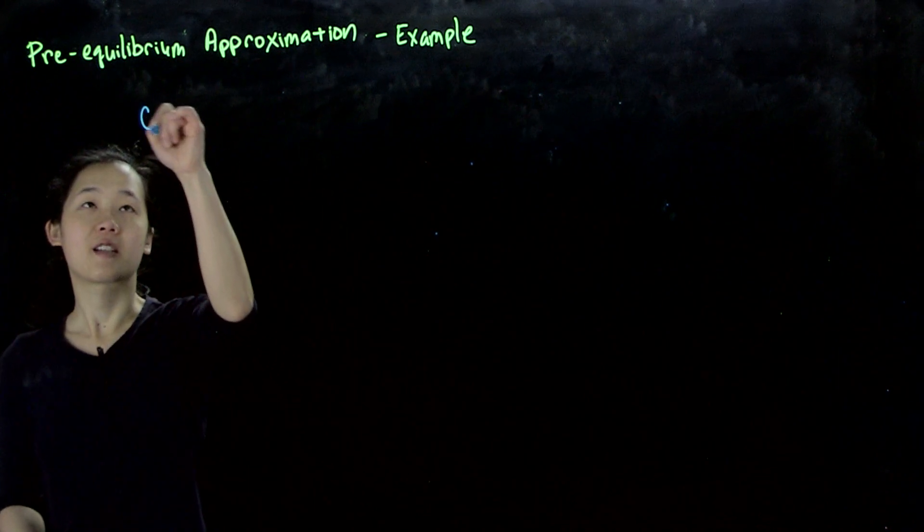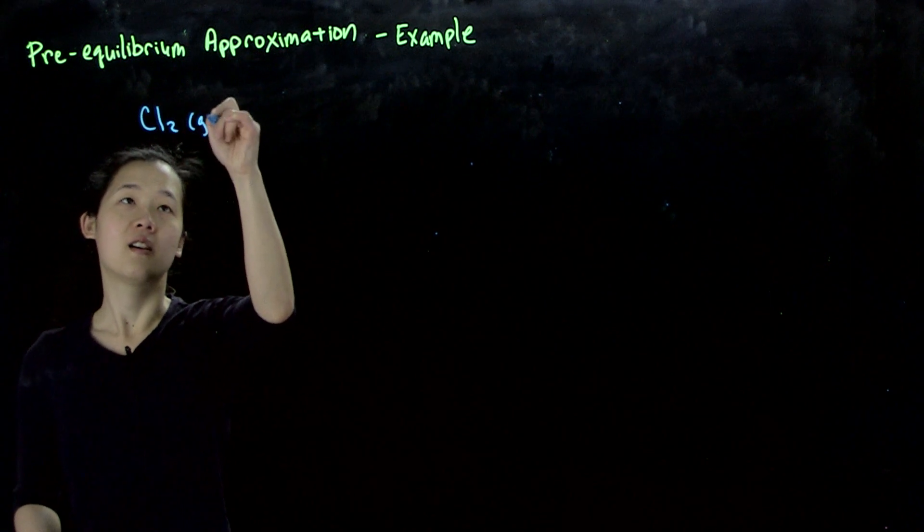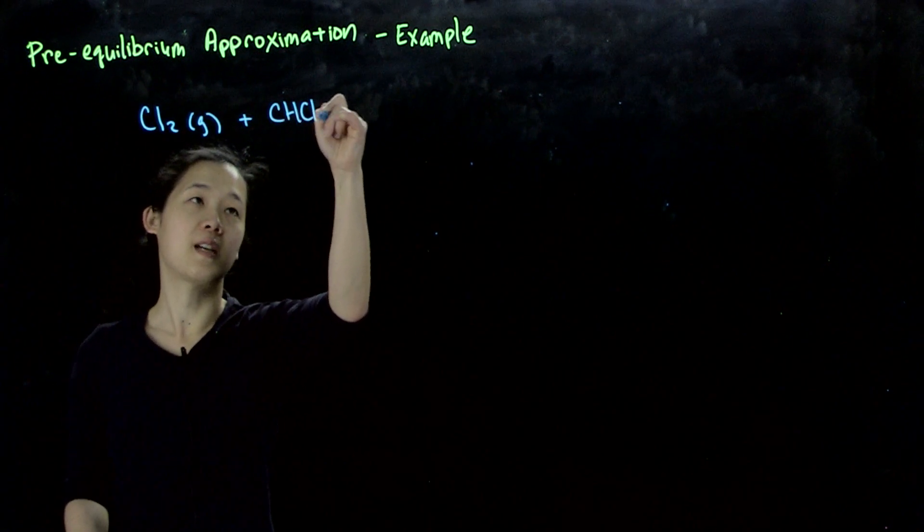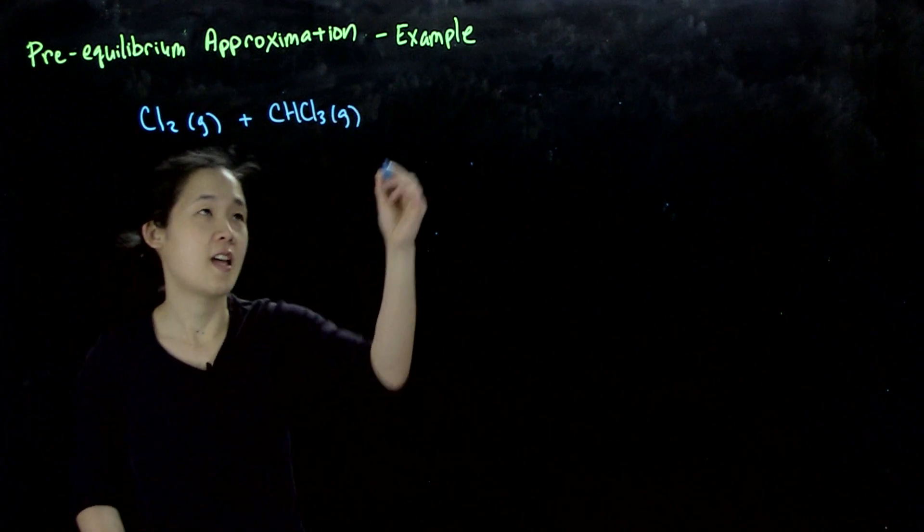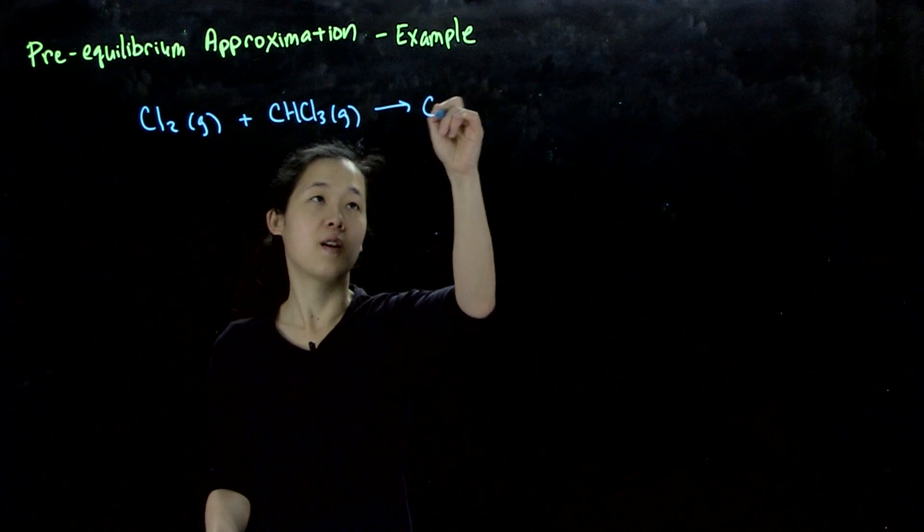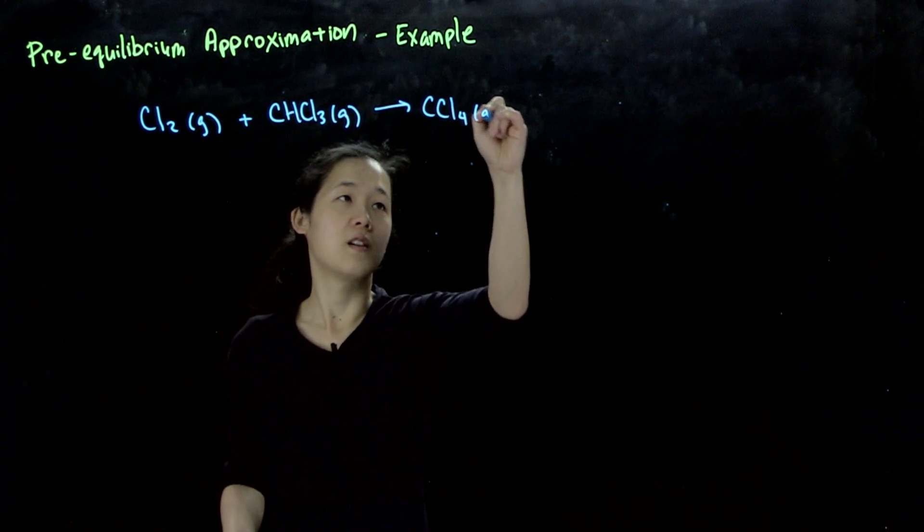Suppose we have this reaction: if you take chlorine gas and heat it up with chloroform, also in the gas phase, that forms carbon tetrachloride and HCl.